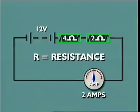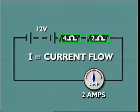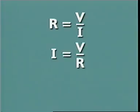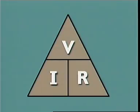This is Ohm's law. R stands for resistance, V for voltage, and I for current in amperes. R equals V divided by I. Therefore, I equals V over R, and V equals I multiplied by R. This triangle is an easy way to remember them.